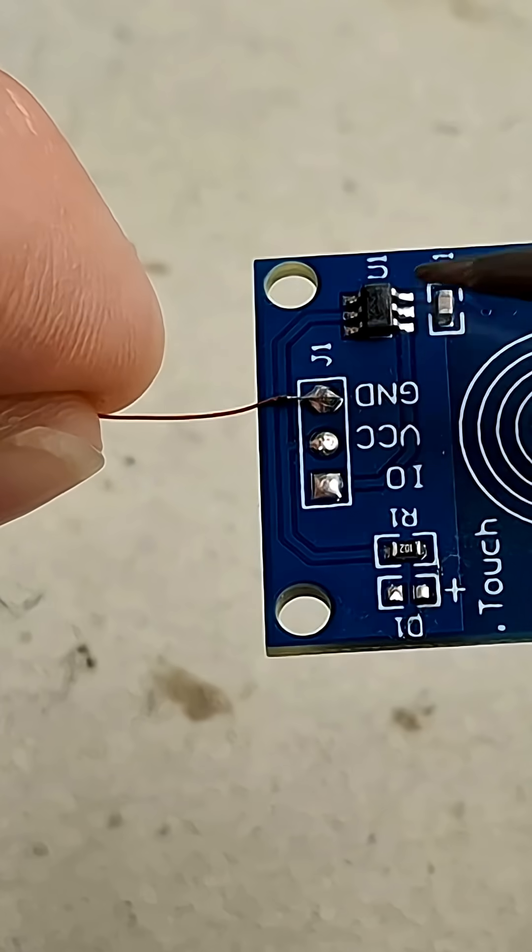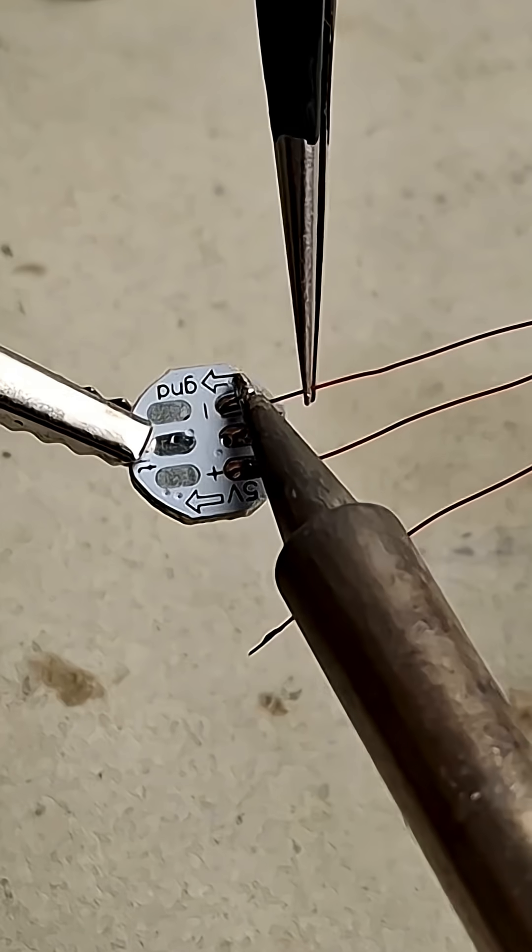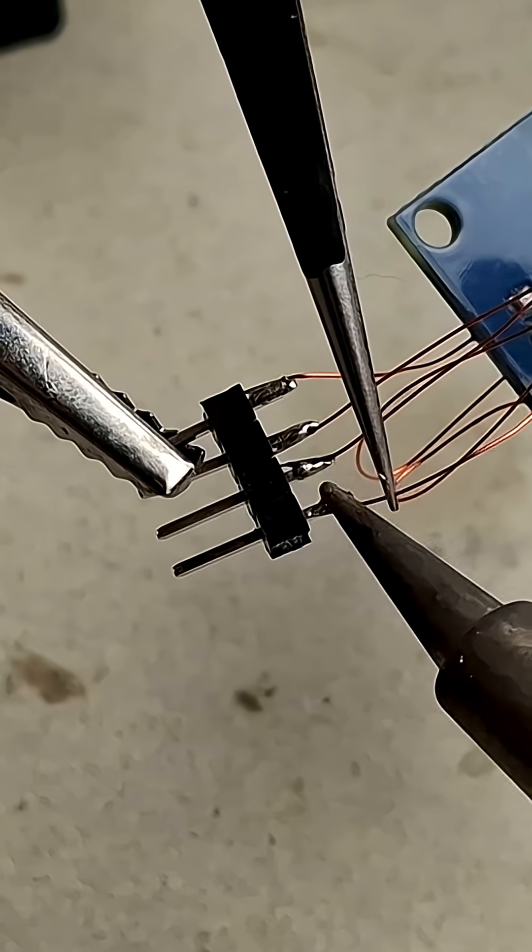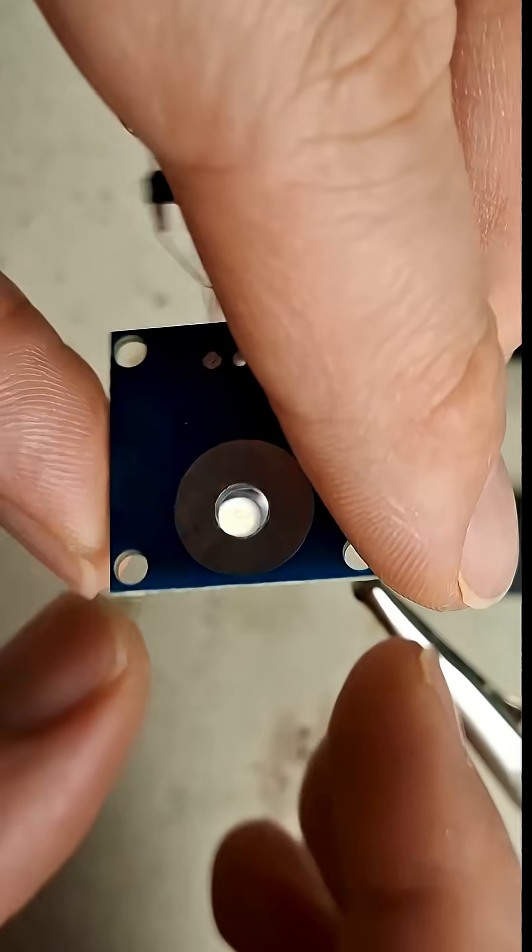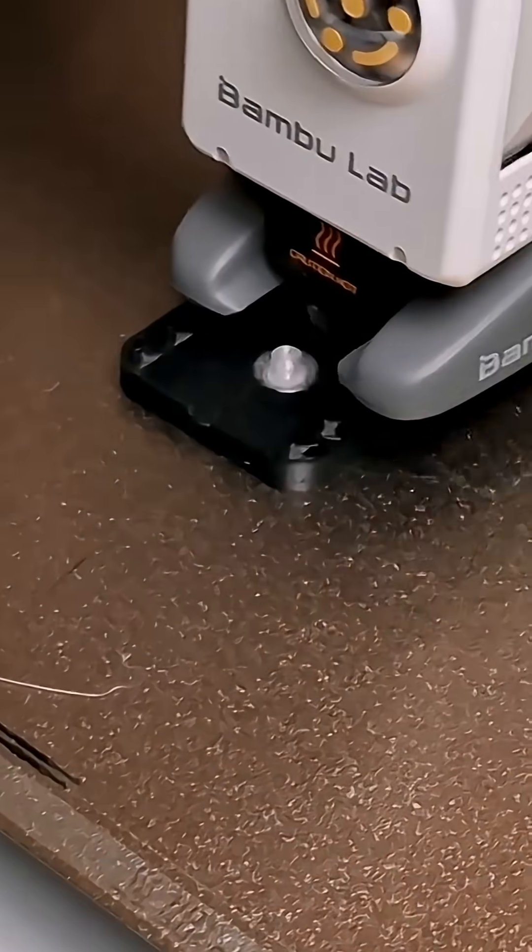The plan was to solder together the LED and touch sensor and then embed them one after the other into the housing as it's being 3D printed. So the print would pause twice, first for the touch sensor and then for the LED.